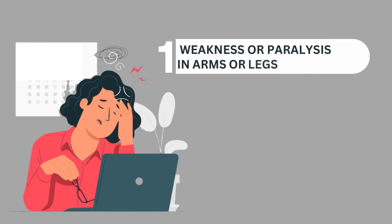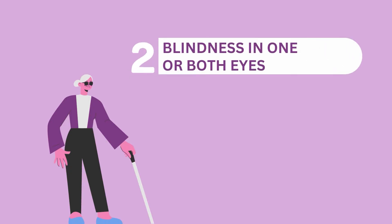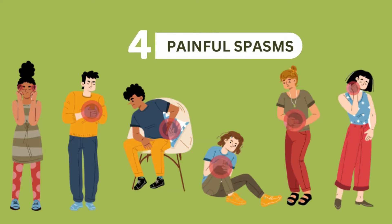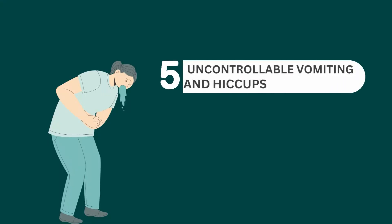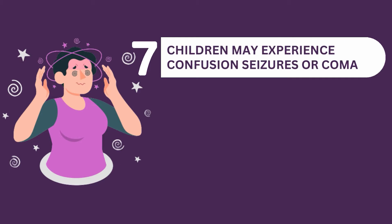Symptoms. The symptoms of this disease include weakness or paralysis in arms or legs, blindness in one or both eyes, numbness or loss of sensation, painful spasms, uncontrollable vomiting and hiccups, bowel or bladder dysfunction from spinal cord damage, and in children, confusion, seizures, or coma.